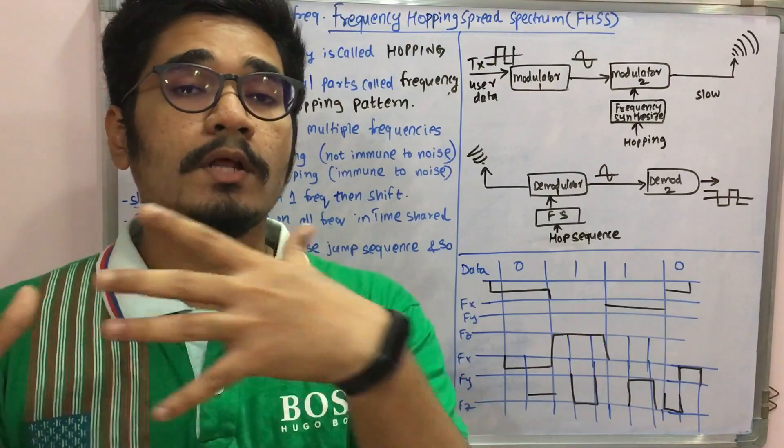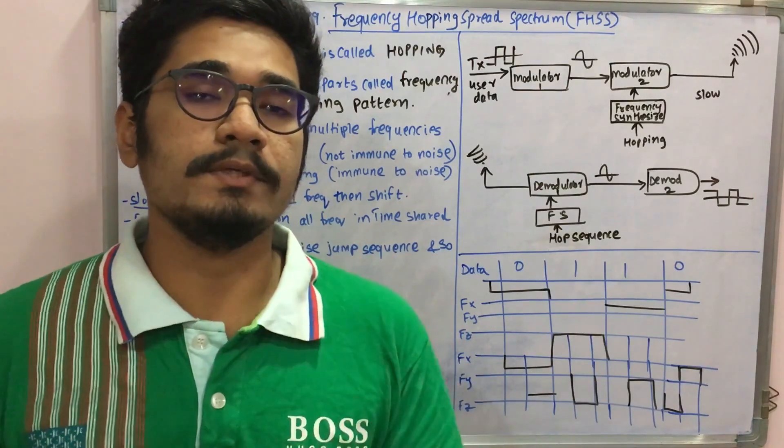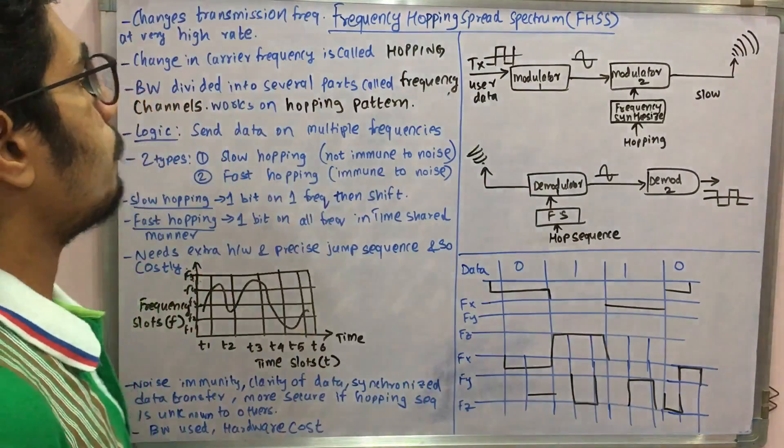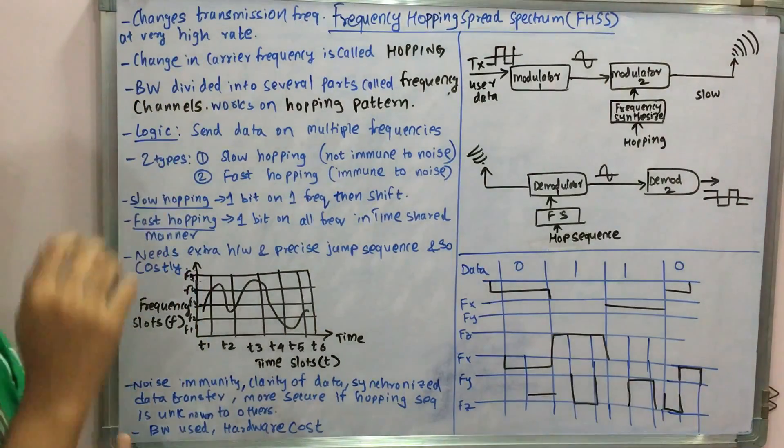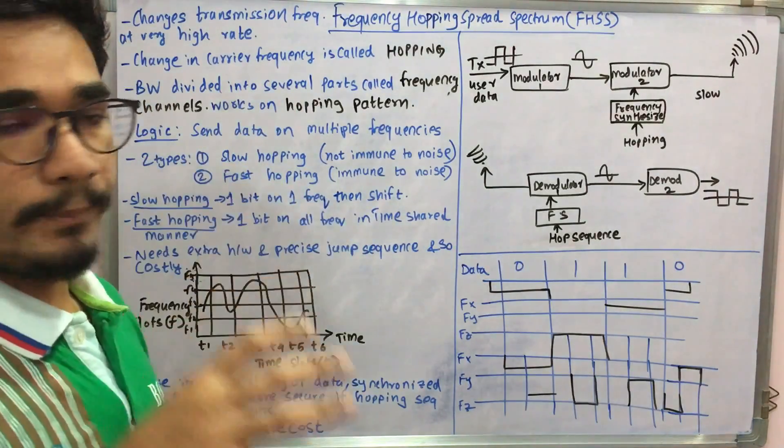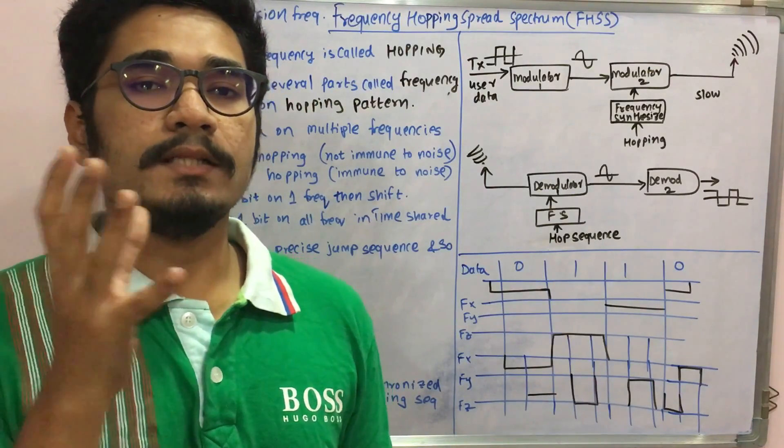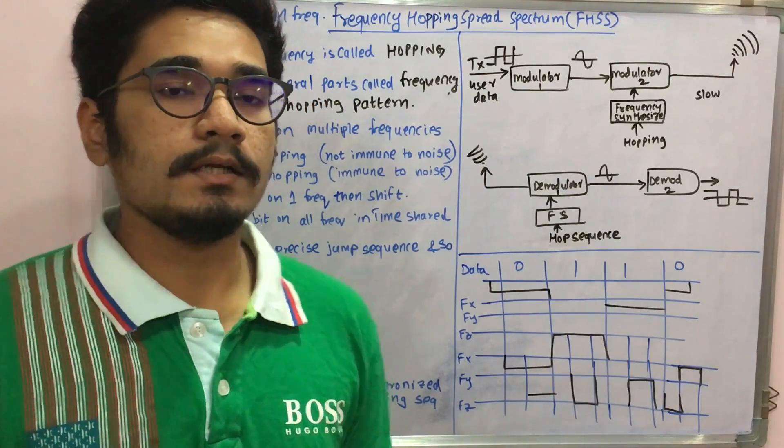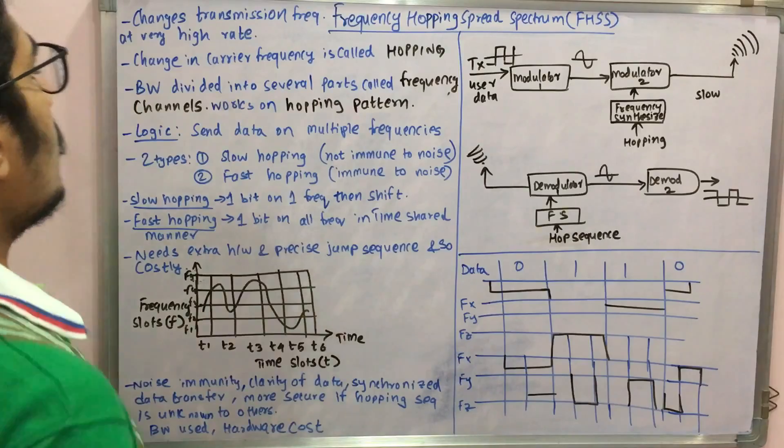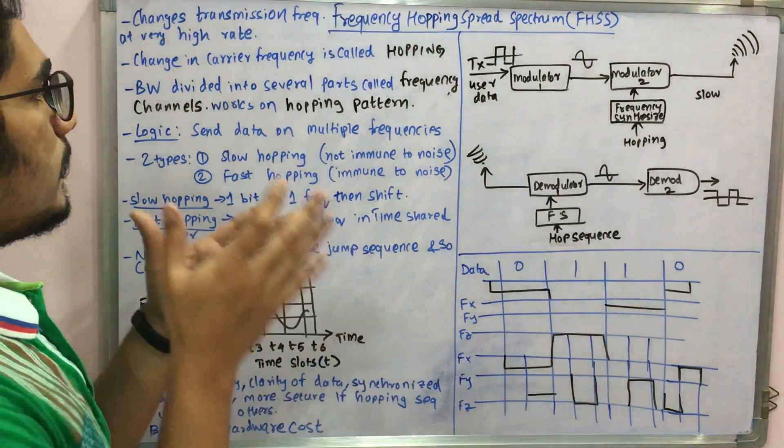There is a particular hopping pattern or hopping sequence which is followed by FHSS. The change in carrier frequency here is called hopping. Like we had in DSSS the chipping sequence or chipping pattern, in this we have hopping and the bandwidth here is divided into